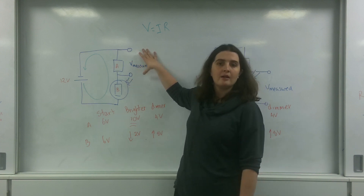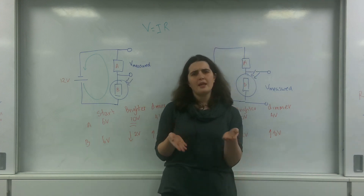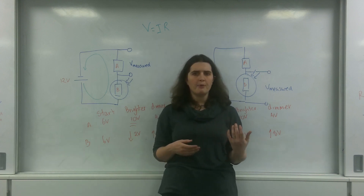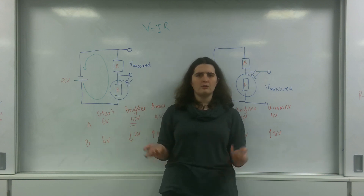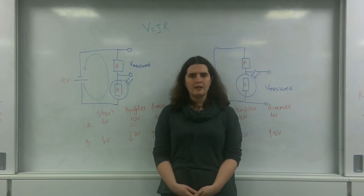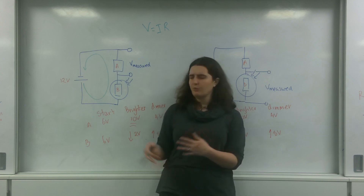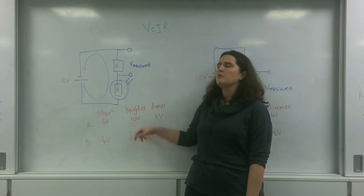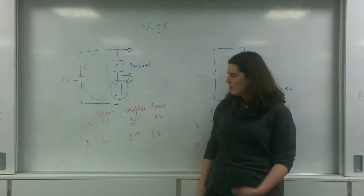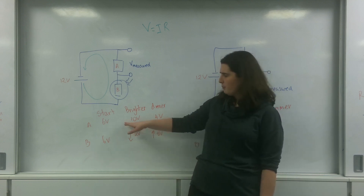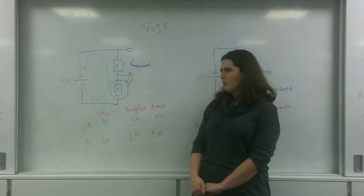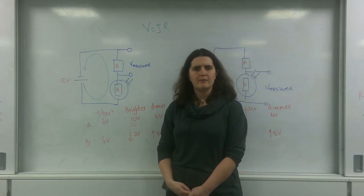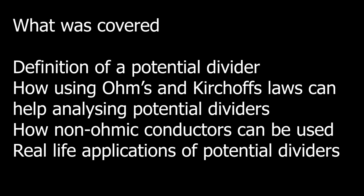A potential divider is all about thinking about what happens when the stimulus changes — do you want the output to go up or down? You really want to choose where you locate components. Write it out: when it gets brighter, that resistance goes down, voltage goes down, so the other goes up. If you want a fan to turn on when bright, put it on side A. If you want a light to turn on when dark, the voltage goes up on side B — put it there. That is potential dividers.